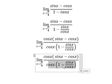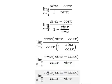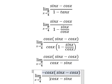We simplify and get cos x minus sin x. Next, we put the negative sign on the numerator and denominator.